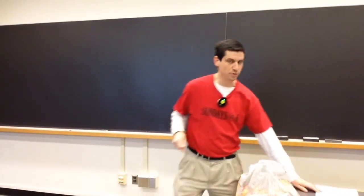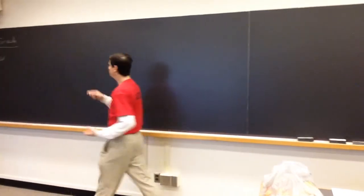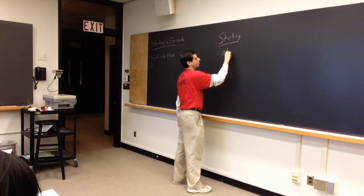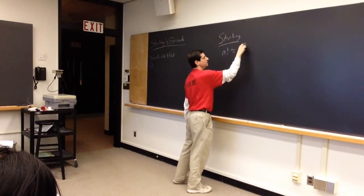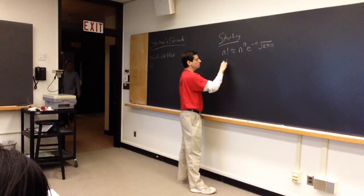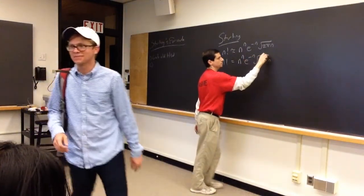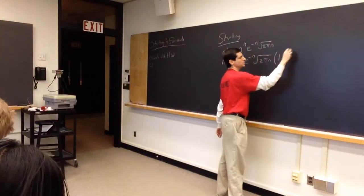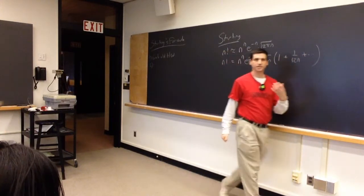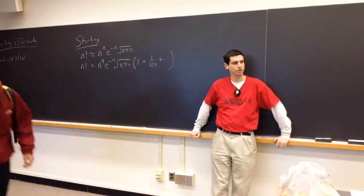If there had been a pop quiz today, it would have been: state Stirling's formula. You should be able to say: n factorial is approximately n to the n, e to the minus n, square root of 2 pi n. You can do a little bit better — you can actually create a series expansion: 1 plus 1 over 12n plus dot dot dot. The more terms you have, the more accurate the approximation can be.